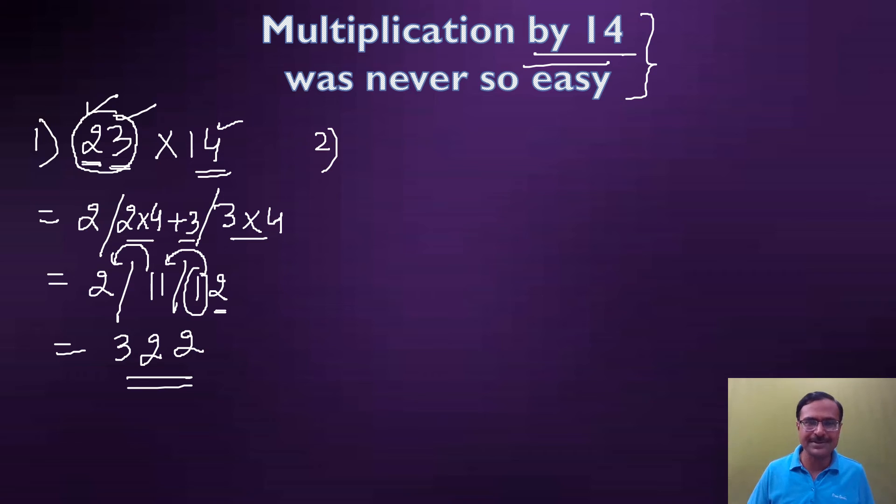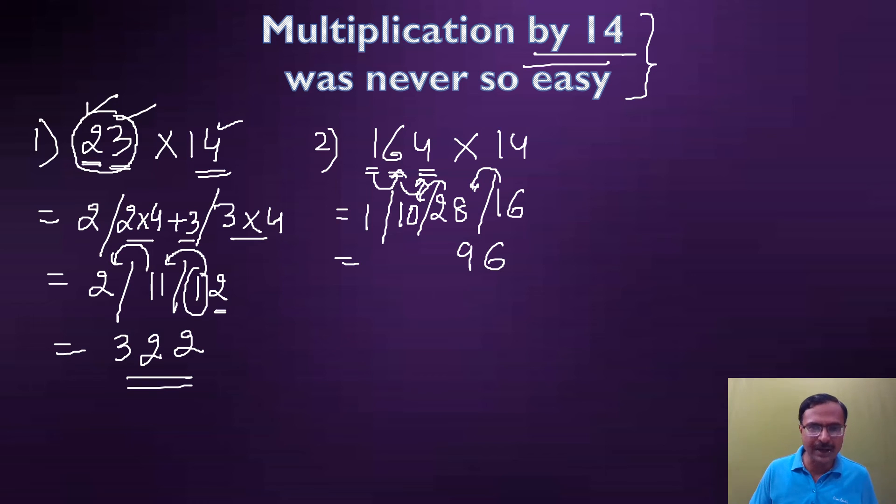Let's take a number like 164 multiplied by 14. 4 times 4 is 16, so I am skipping one step now. 6 times 4 is 24 plus 4 is 28. 1 times 4 is 4, 4 plus 6 is 10, and then 1 comes alone. So what's the answer? 6, 1 carried so 29, 9, 2 carried so 12. 12 means 2 and 1 carried, that means 2. So 2296 is the product.